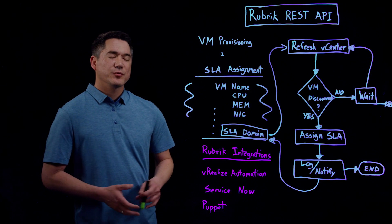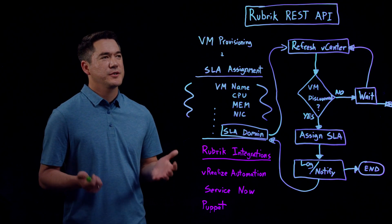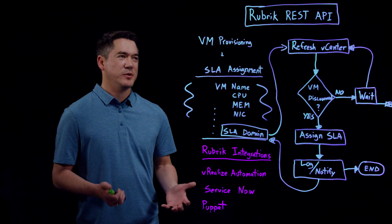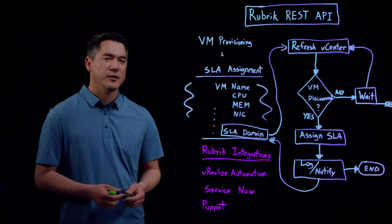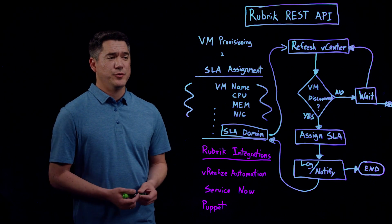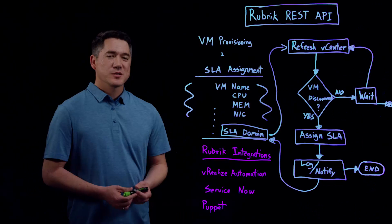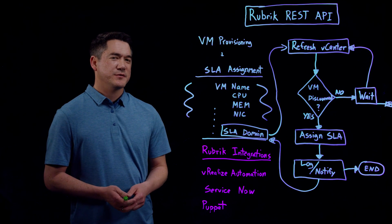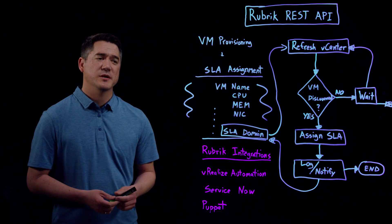We can leverage the Rubrik REST API to accomplish very flexible workflows. It's really the full coverage behind our REST API — all of the items that you see within the Rubrik interface is a REST API call. Because of this coverage, it really empowers you to accomplish your business goals through automation with maximum flexibility. Please check out our other lightboard videos, and for further details about our Rubrik integrations, please visit the blog on the Rubrik website. Thank you.